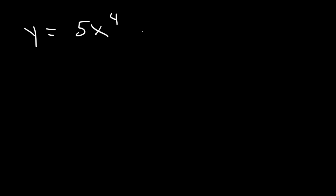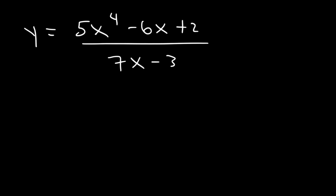Now what about 5x to the 4th minus 6x plus 2 divided by 7x minus 3? The degree of the numerator exceeds the denominator by more than 1, so there is no horizontal asymptote and no slant or oblique asymptote. The only time you get a slant asymptote is if the numerator exceeds the denominator by exactly 1.